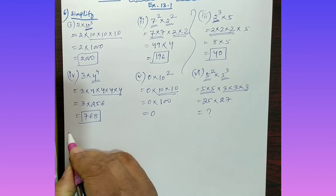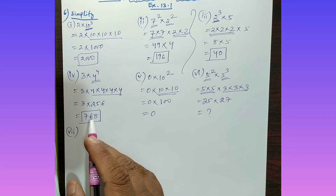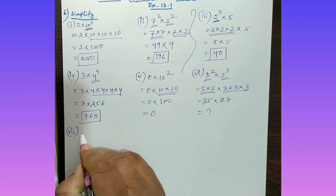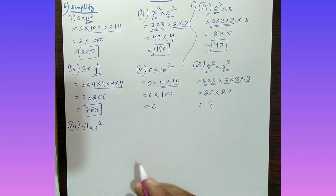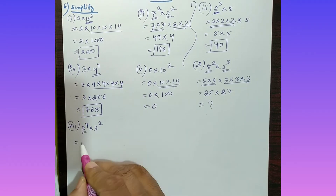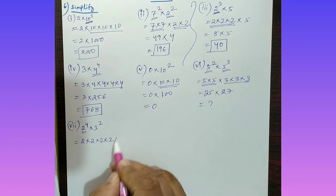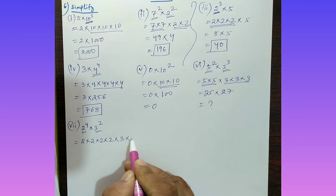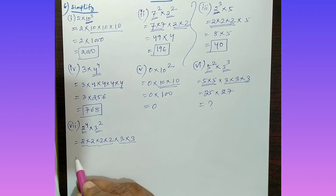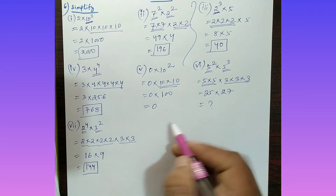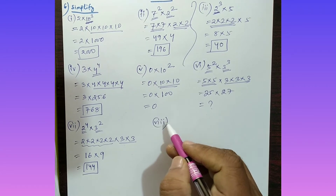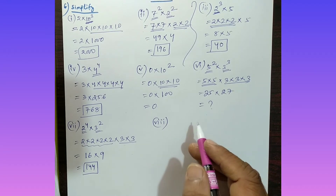Part (vii): Simplify 2 to the power 4 into 3 square. Two to the power 4 means 2 is multiplied 4 times: 2 into 2 into 2 into 2, which is 16. Three squared means 3 is multiplied 2 times: 3 into 3, which is 9. So 16 into 9 equals 144.